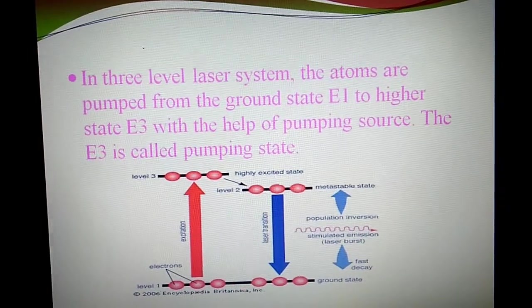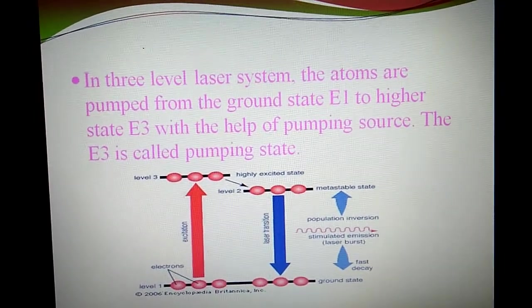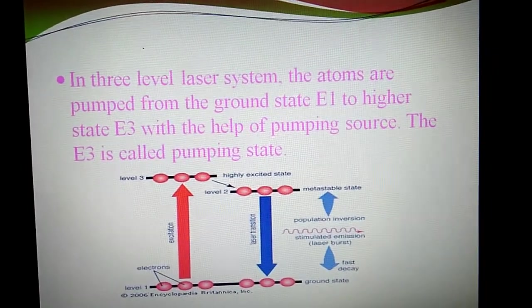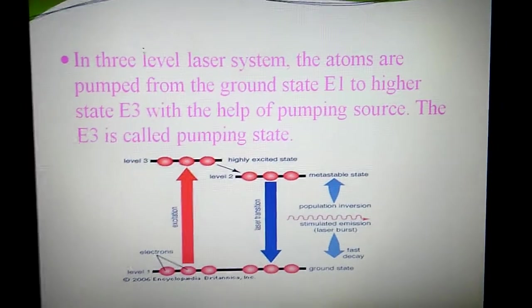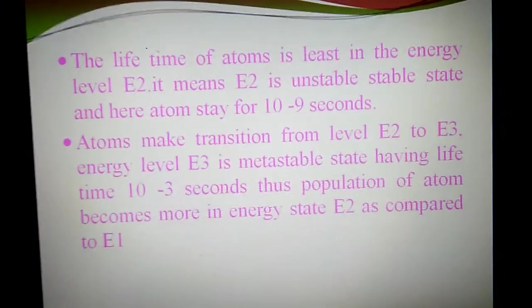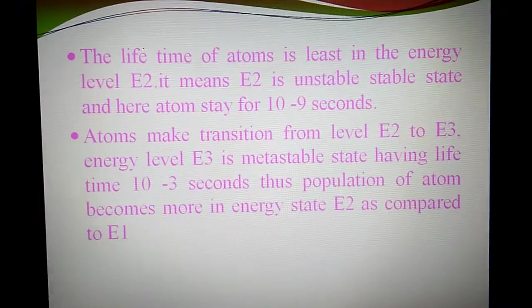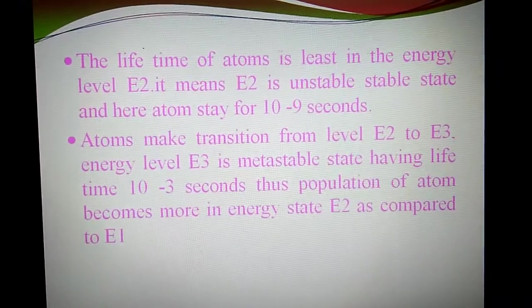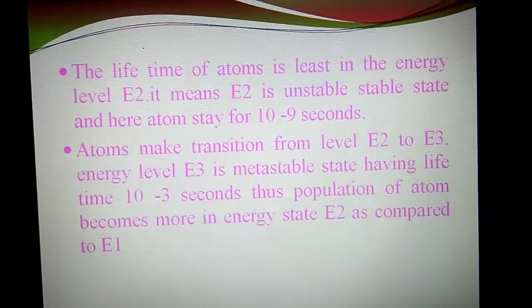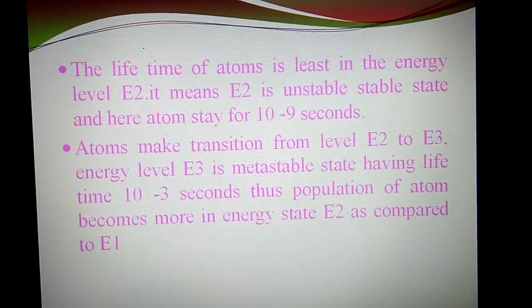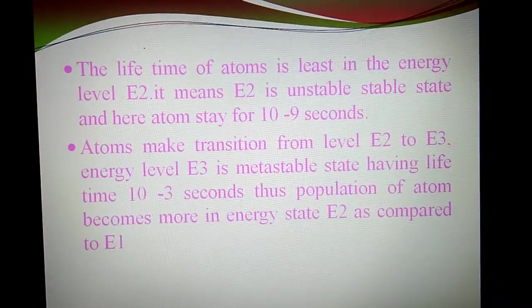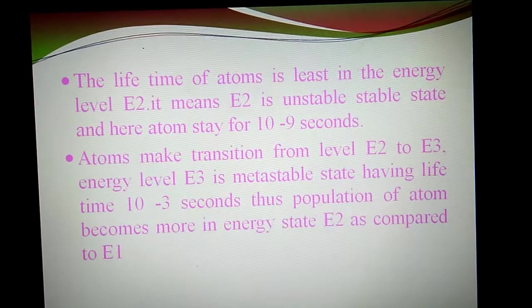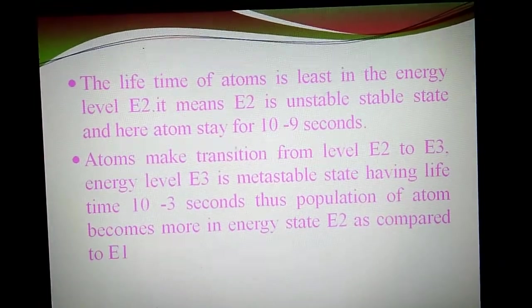This is mechanical energy, not in the form of photon. Atoms in E2 live long time. After some time, number of atoms in E2 will increase and number of atoms in E1 decrease, meaning the condition of population inversion occurs and laser starts to emit between E2 and E1.